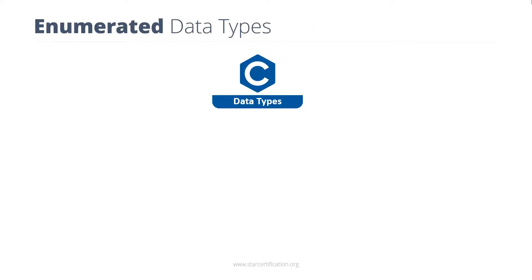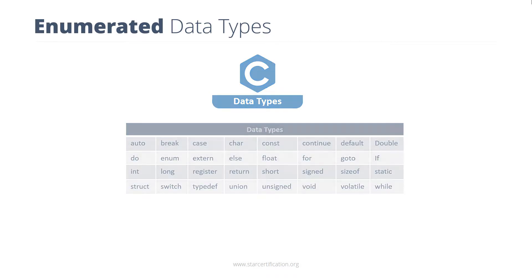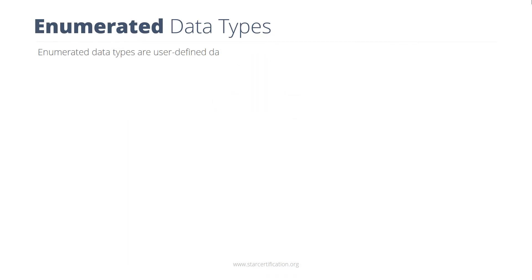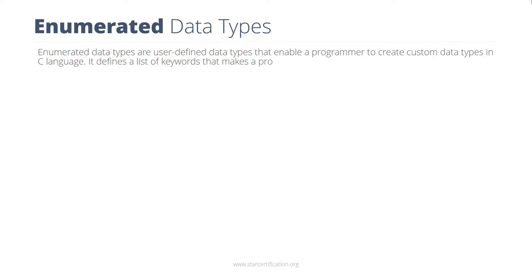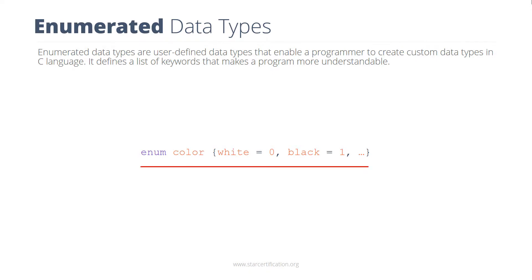Sometimes you need to define your own data types in addition to what is available in the system. Enumerated data types are user-defined data types that enable a programmer to create custom data types in C language. They define a list of keywords that makes the program more understandable and contain integral constants. You can use integer constants to write a program to check colors, for example. Enumerated data types are created in C using the enum keyword. The syntax for this is shown on the screen.